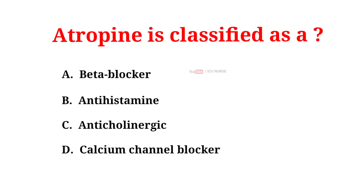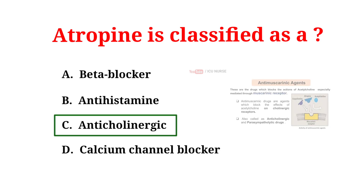Atropin is classified as: A. Beta blocker, B. Antihistamine, C. Anticholinergic, D. Calcium channel blocker. The correct answer is C. Anticholinergic. Atropin is commonly classified as an anticholinergic drug. More precisely, however, it is termed an anti-muscarinic agent since it antagonizes the muscarin-like actions of acetylcholine and other cholinoesters.